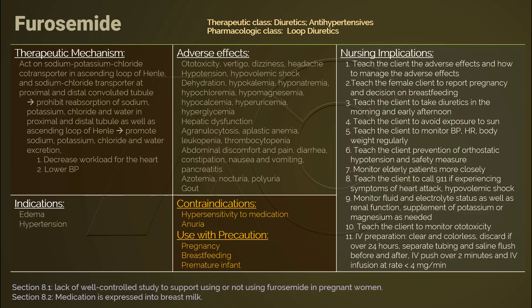Teach the client prevention of orthostatic hypotension and other safety measures. Monitor elderly patients more closely because they are more susceptible to fluid and electrolyte imbalances. Teach the patient to call 911 if experiencing symptoms of a heart attack or hypovolemic shock. Monitor fluid and electrolyte status as well as renal function, and use supplements of potassium or magnesium as needed.